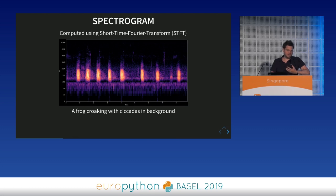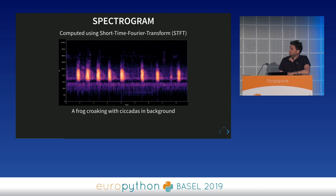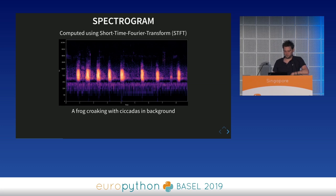After having a waveform, we can convert it into a spectrogram, which is a very useful representation both for humans to understand the sound and for machines to do detection. For example, a frog croaking very periodically is clearly visible in a spectrogram, with cicadas visible in the higher frequencies. This representation shows the frequency content and patterns across time, allowing separation of different sound sources from the mixture.